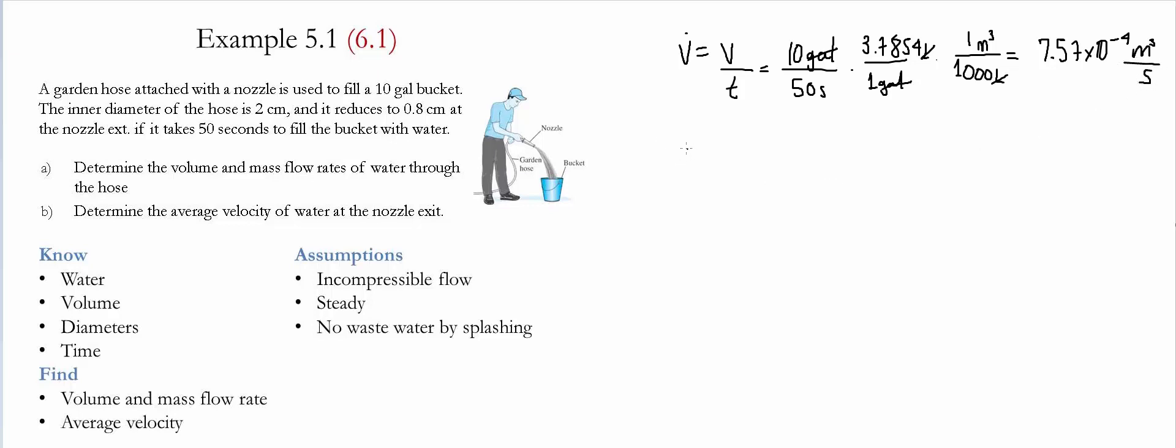The next step is to calculate the mass flow rate. The mass flow rate is simply the density multiplied by the volume flow rate. We take this to be water, so the density we're going to use is a thousand kilograms per meter cubed.